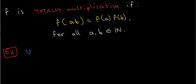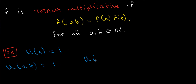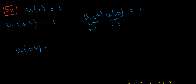Let's look at the unit function u(n) equals 1 and check if it's multiplicative. Well, u(ab): if a and b are positive integers then so is ab, and if ab is a natural number then u(ab) equals 1 by definition. And u(a) times u(b) equals 1 times 1, which is also 1. So u(ab) equals u(a) times u(b), meaning u is multiplicative. Not only that — since I didn't use the coprime condition at all, it's true for all natural numbers a and b, so u is actually totally multiplicative.